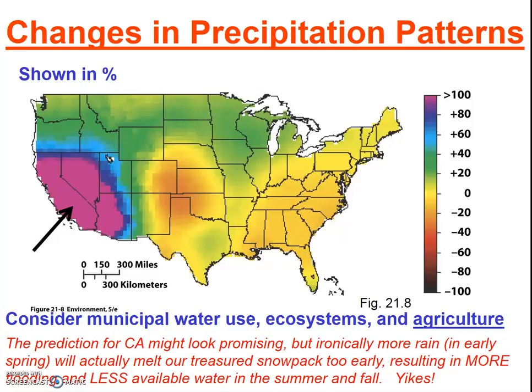We can also expect changes in precipitation patterns. The figure in this slide is very old and the modeling may be outdated, but what we can be sure of is that global precipitation patterns are changing. The IPCC's Fifth Assessment Report indicated that many regions will experience longer dry periods — increased drought — while other regions may experience heavier rains. Parts of California may actually get more rainfall, but early spring rains will destroy our primary water storage system: snowpack. Our reservoirs hold only a very small percentage of our total water needs; we rely on the gradual melting of snowpack through spring and into summer to continually fill our reservoirs. With spring rains, we would end up with devastating flooding in the spring and then run out of water by mid to late summer.